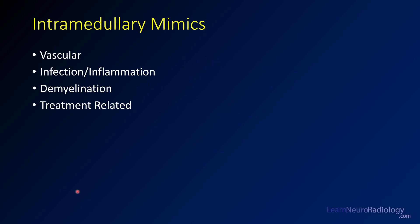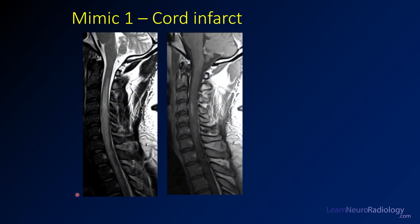Today we're going to talk about things in the spinal cord that can mimic tumors. There's a broad set of categories: vascular abnormalities, infectious or inflammatory abnormalities, demyelinating disease, and other treatment-related considerations. All of these things can look like tumors, so we're going to take a quick look at a couple of examples.